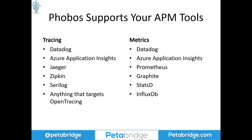Phobos works with whatever your company's preferred APM tools are. Your business might use Application Insights, Jaeger, or Prometheus, which are open source tools. Phobos supports a growing number of tools and is designed to be extensible. It works with open standards — for tracing, we target the OpenTracing standard; for metrics, we use the popular App.Metrics library for .NET. And in the not too distant future, we will be supporting OpenTelemetry, which covers both tracing and metrics and will be part of ASP.NET Core 5 or 6.